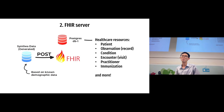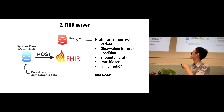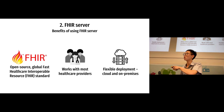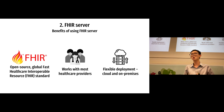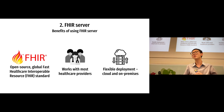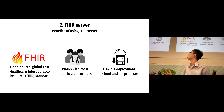Now we move on to the FHIR server. After all the patient records are generated, we can post them to the FHIR server. Resources like patient, observation, condition, encounter, and so forth all reside within the FHIR server. One of the benefits of using a FHIR server is that it is open-source and works with the global Fast Healthcare Interoperability Resource standard. FHIR works with over 90% of US healthcare providers as of 2021 — a vast majority in this very fragmented healthcare world. It is also very flexible, being able to be deployed on-premises or in the cloud.